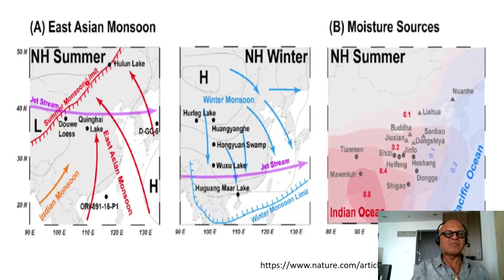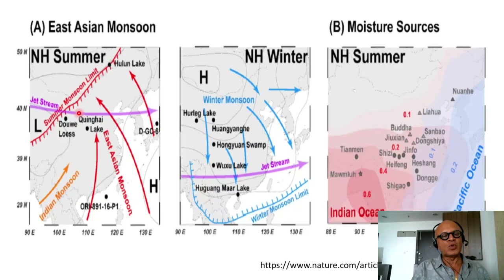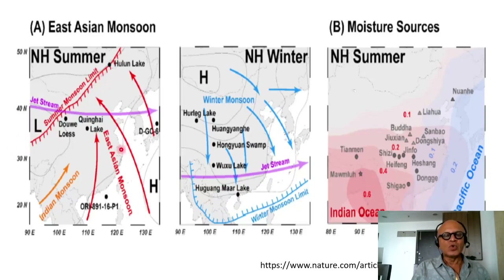Just schematically, this is the Northern Hemisphere summer and Northern Hemisphere winter. You can see there is the jet stream, which moves quite significantly in latitude from summer to winter. Summer monsoon circulation tends to push the westerlies way further north, and then during the winter that can dip down quite significantly south. There are other troughs like the summer monsoon limit here with East Asian monsoon circulation, which interacts with the Indian monsoon circulation. The moisture sources here are obviously complicated.